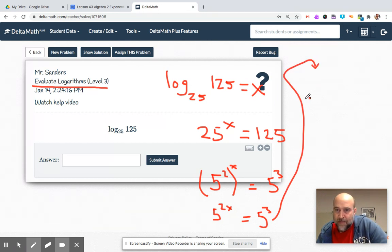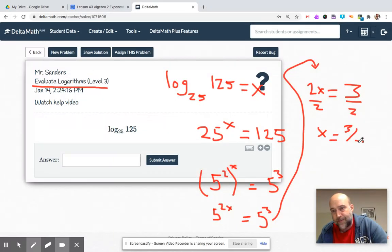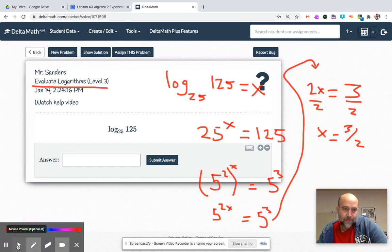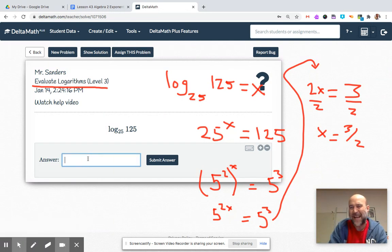If the bases are the same, the exponents are the same. So that means 2x is equal to 3, divide by 2, x is 3 halves. Okay, so I think the game here is going to be making the bases the same in some way.